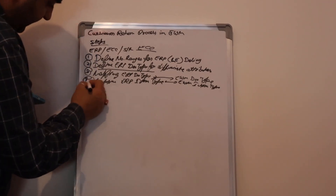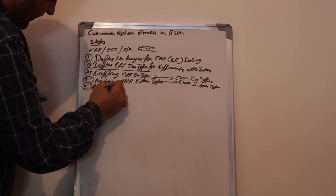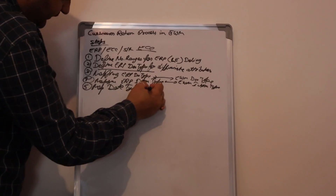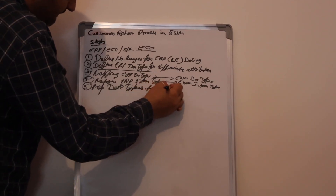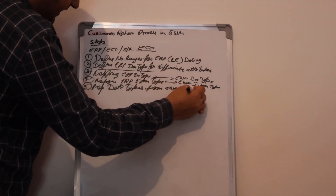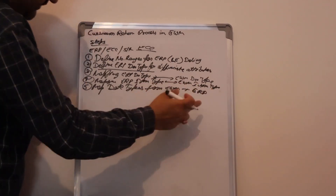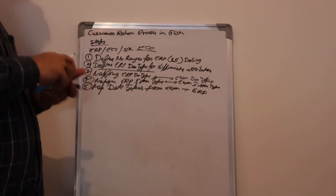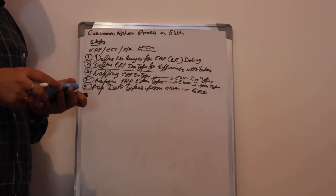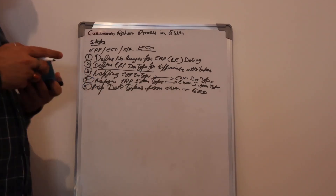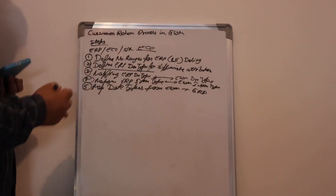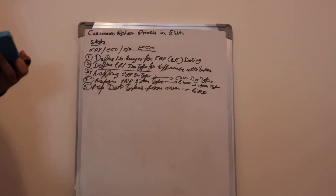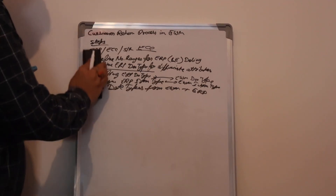Fifth is to map date types from EWM plus ERP. On the ERP side, we need to configure the date types — on which date we received. Then after that, I am going to do the configuration for the EWM side.